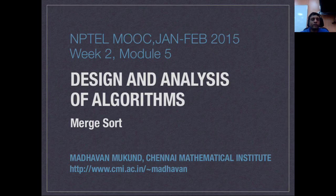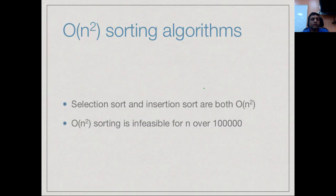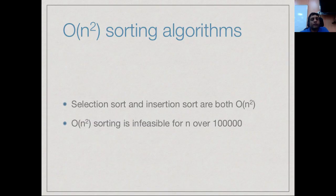We have seen two intuitive sorting algorithms, selection sort and insertion sort. Unfortunately, both of them turn out to be O(n²), and we know that O(n²) is not really good enough for sorting large arrays. So what can we do instead?